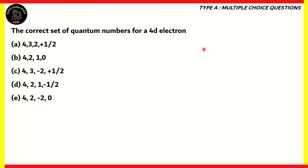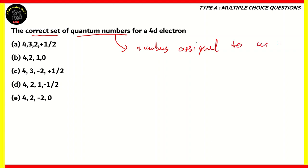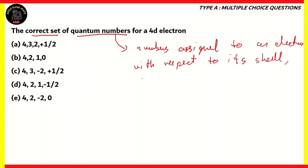How are we going to solve this question? In order to solve it, we need to understand what quantum numbers are. Quantum numbers are numbers assigned to an electron with respect to its shell, orbital, and spin. If you have studied atomic structure, you know that electrons are placed in shells. Each shell has a subshell, each subshell has one or more orbitals, and each orbital can support two electrons with opposite spin.